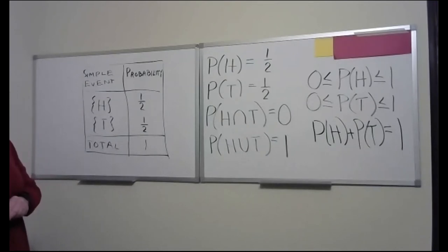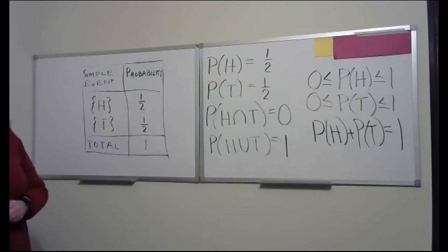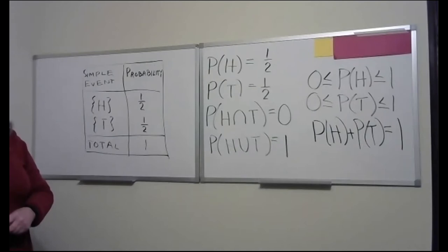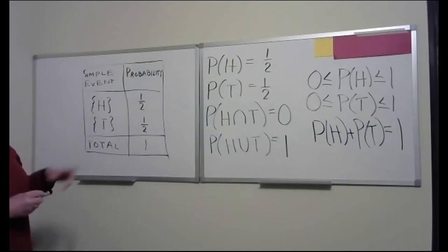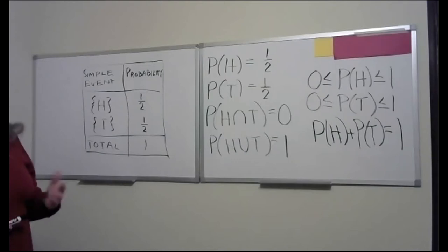Along those lines, if we were drawing cards and talking about drawing a heart, a diamond, a club, or a spade, our simple events would just be {H}, {D}, {C}, and {S} in set braces. Does that make sense to everybody for simple event?